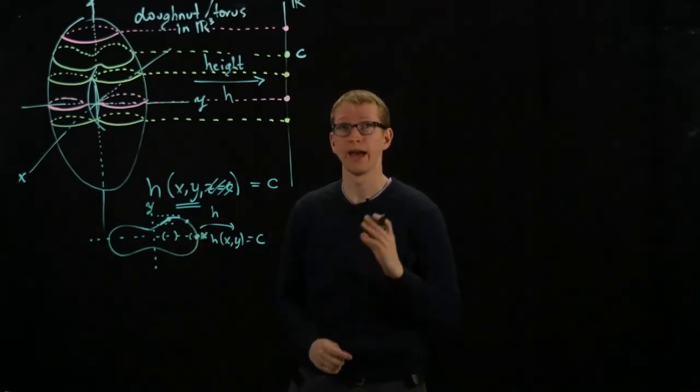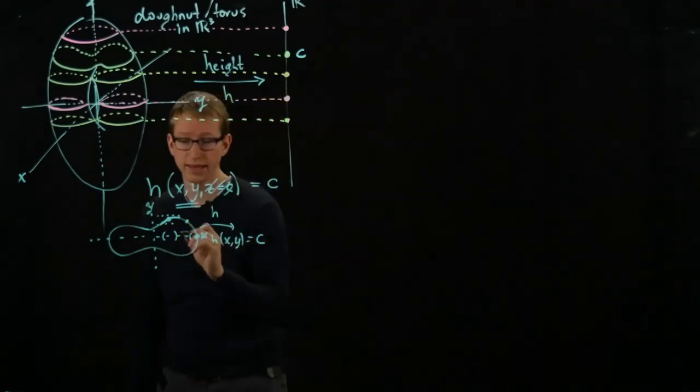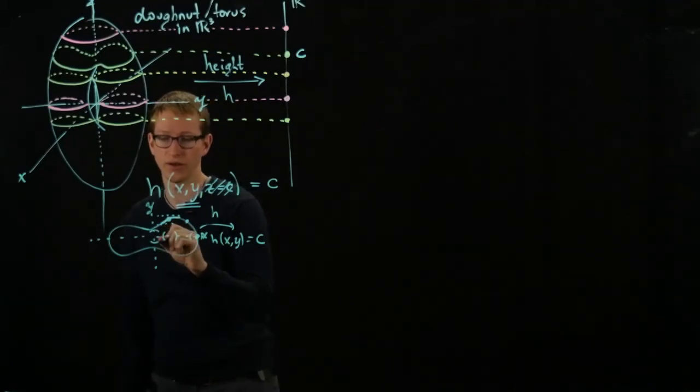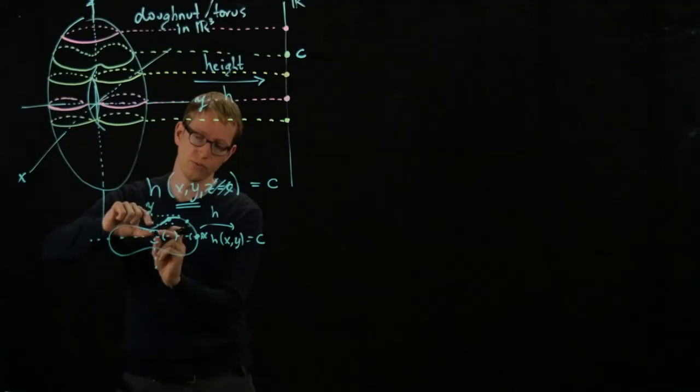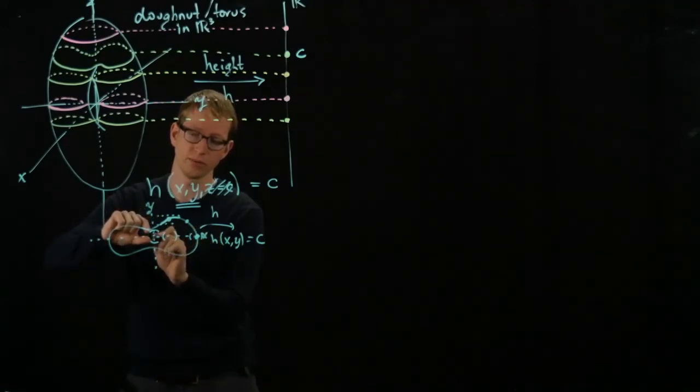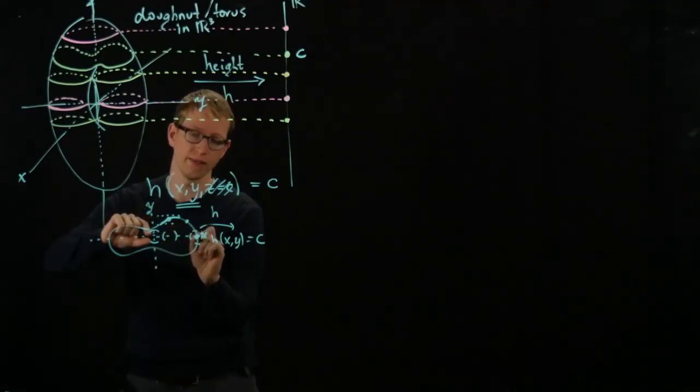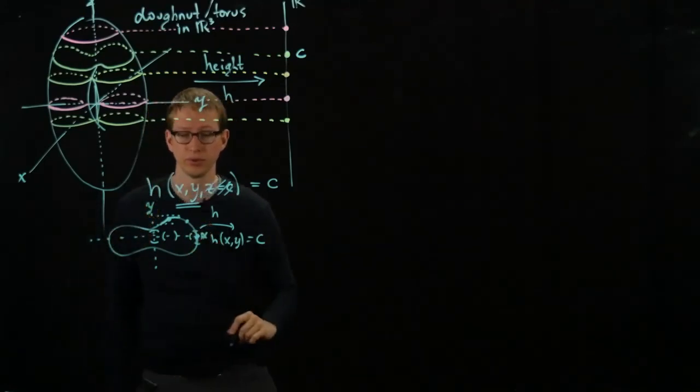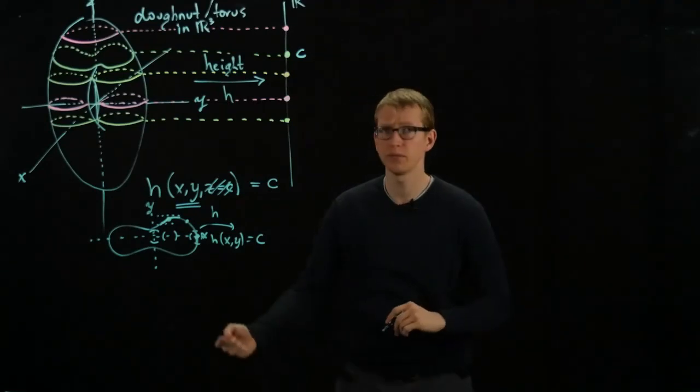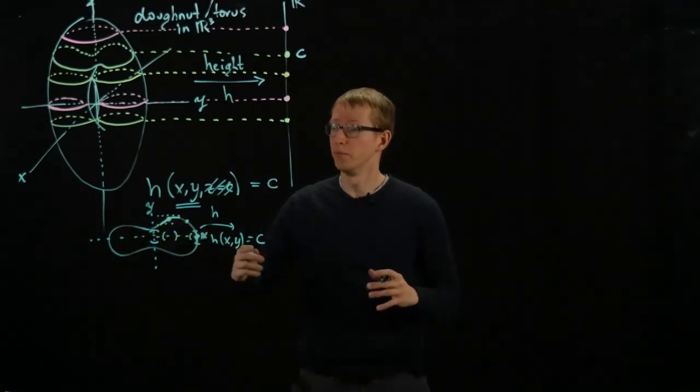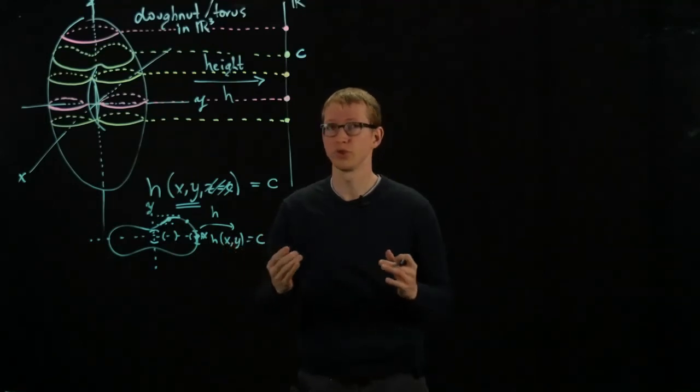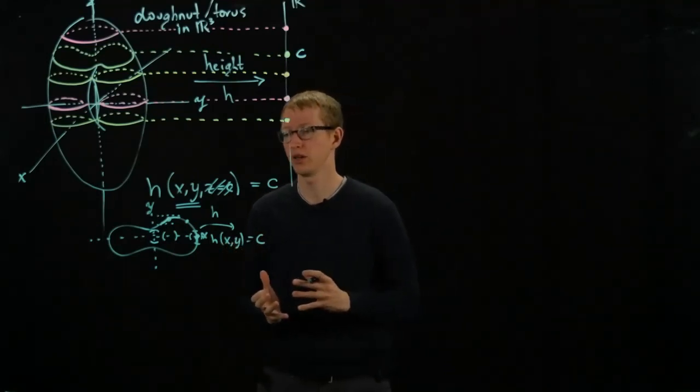However, we can write it as a function of the other variable by simply tilting our heads and writing this position, finding some neighborhood here, and writing this curve as a function of Y at this point. So we can sort of describe our curve by different functions restricting to different domains depending on certain conditions.